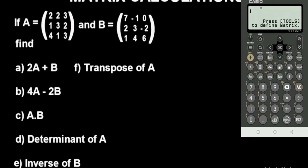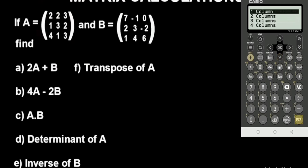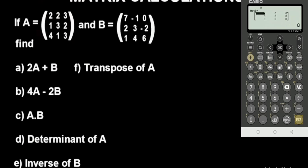Press the back button, then press 2 to go to Mat B and define it. This is also a 3 by 3 matrix — three rows and three columns. Confirm and input the values for Matrix B: 7, negative 1, 0, 2, 2, 3, negative 2, 1, 4, 6.